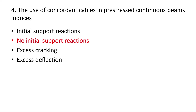Question 4: The use of concordant cables in prestressed continuous beams induces no initial support reactions. A concordant cable profile is one where the C-line coincides with the P-line when external loads are not applied. Because of this, there are no reactions at supports due to prestressing alone. Option B is correct.